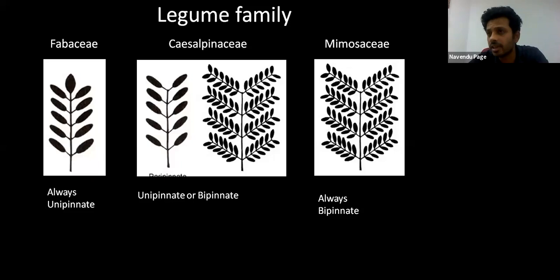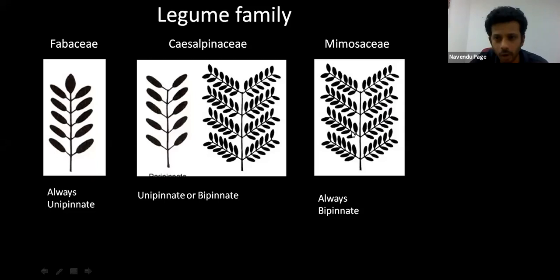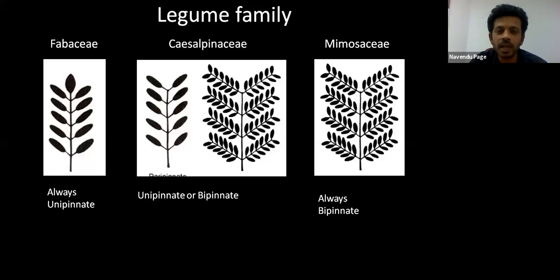Interestingly, the legume family will always show compound leaves — you will not find a single member of the legume family with simple leaves. So every time you come across a compound leaf, the first thought should be: does it belong to the legume family? The legume family is further divided into three subfamilies. The Fabaceae or pea family — which includes Erythrina, Butea, and all the pulses we eat — will always, always show only unipinnate leaves. At the other extreme, the Mimosaceae or touch-me-not family will always show bipinnate leaves.